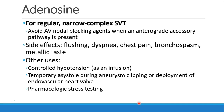If patients have regular, narrow-complex supraventricular tachycardia, adenosine is a great drug to use. In fact, it's even appropriate as an emergency alternative to synchronized cardioversion. However, if patients have some sort of anterograde accessory pathway, this wouldn't be appropriate. So we would avoid adenosine in patients who are irregular or who have wide-complex SVT, which might be a sign of an anterograde pathway.